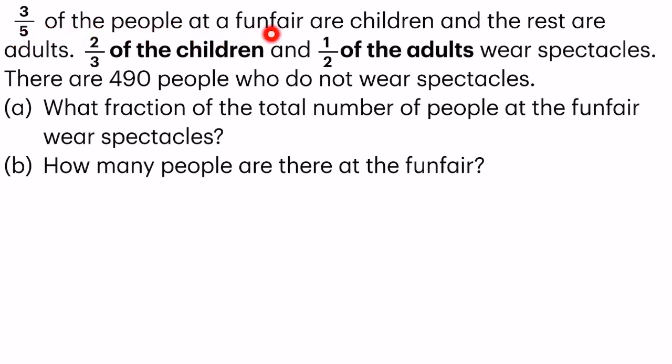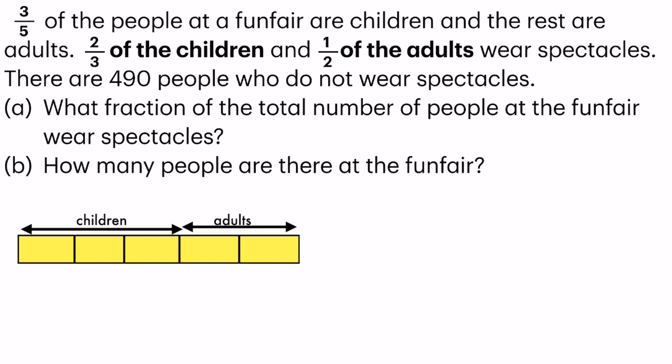Three-fifths of the people at the funfair are children, and the rest are adults. So total there are five units, and three-fifths of them are children. And since they said that the rest are adults, I would assume that two-fifths of them are adults.